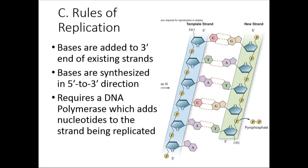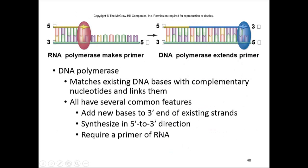A key rule of replication: bases can only be added to the three-prime end, not the five-prime end. So strands are synthesized in the five-prime to three-prime direction. This requires an enzyme called DNA polymerase, which adds new nucleotides to that three-prime end.